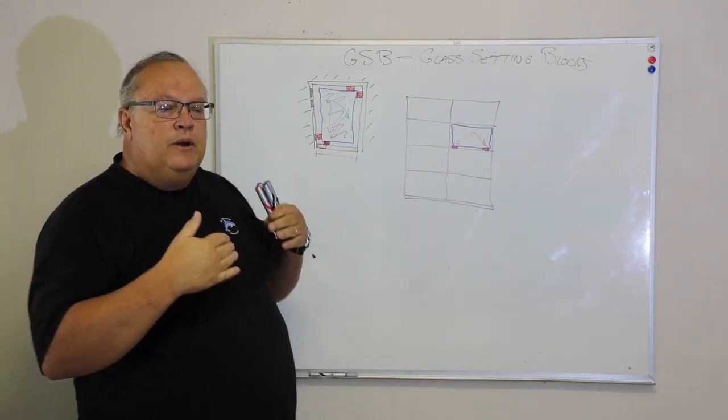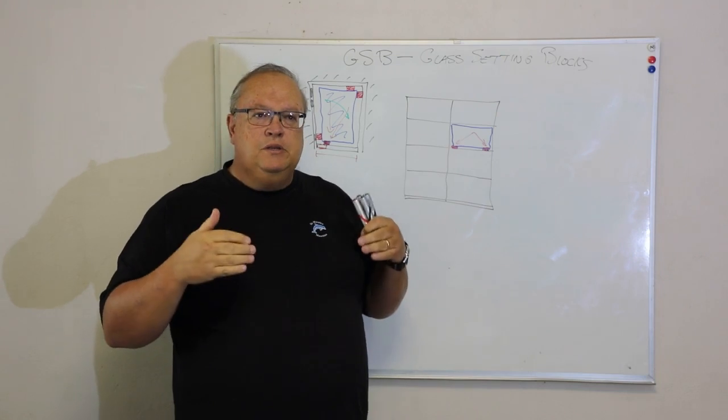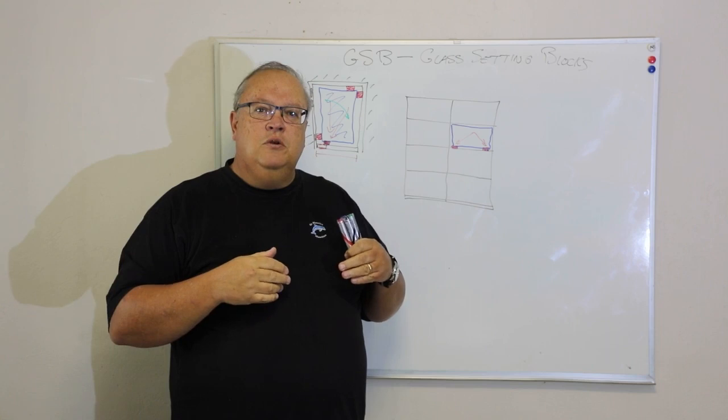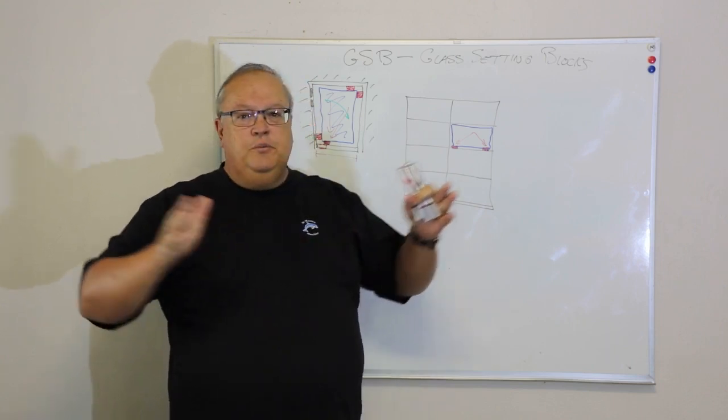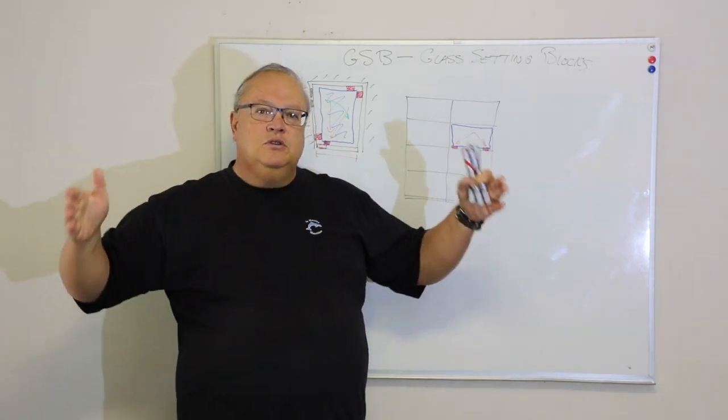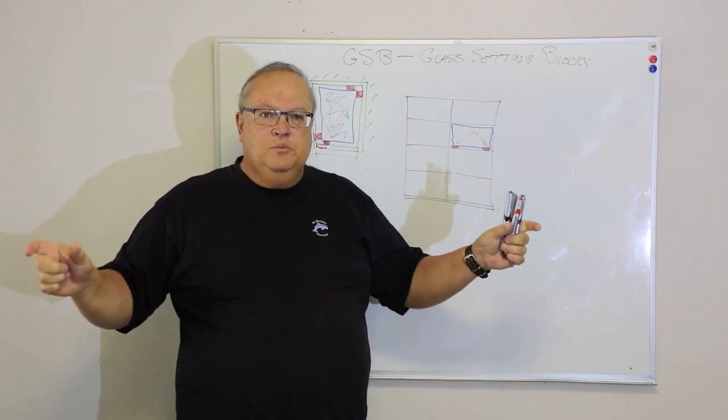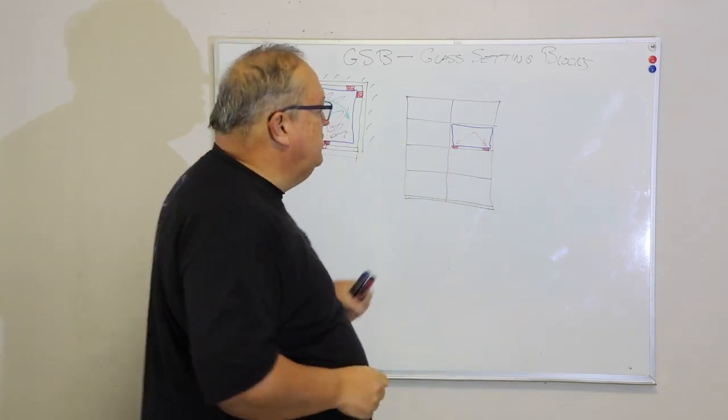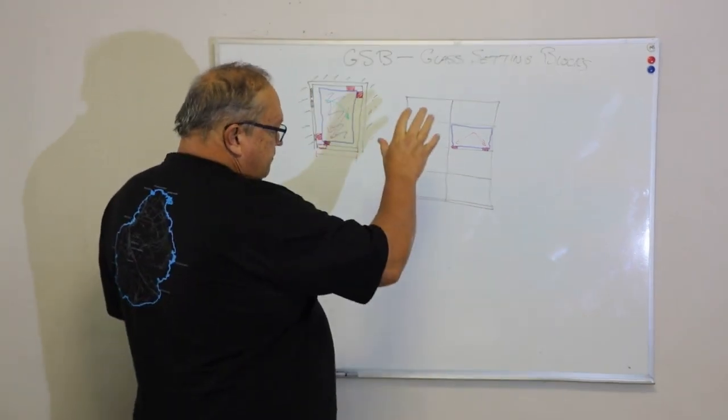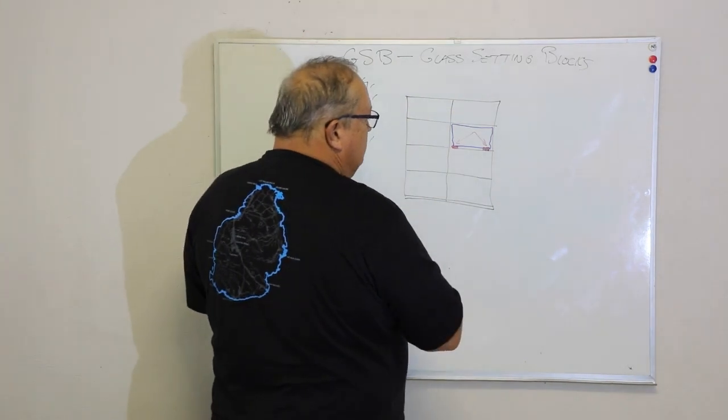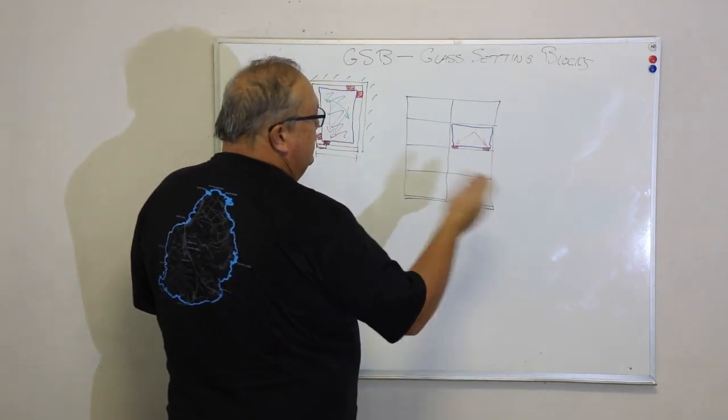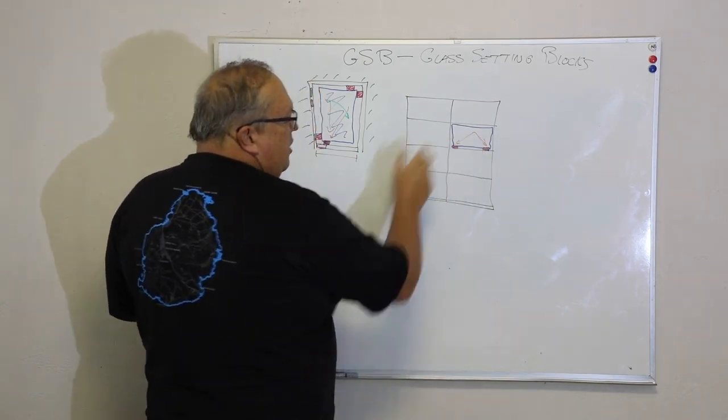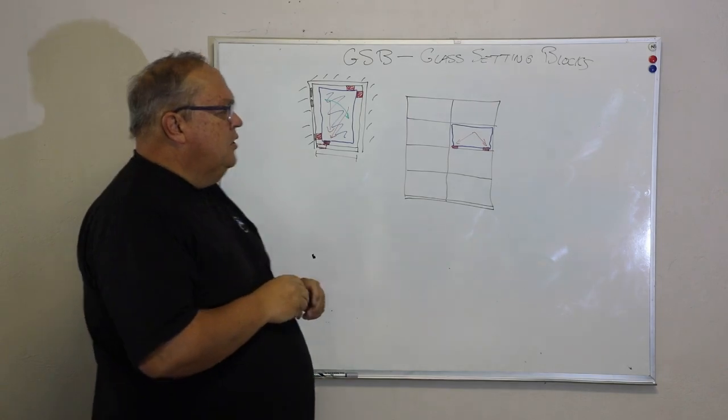So a lot of people worry about transom sagging, and they say well especially if you're putting a piece of double glaze in above it. That should never be a concern because as long as your glass sitting blocks are distributing the weight of that piece of glass to the outer edges, those are the strongest points of the transom, and the transom should not sag. So on a fixed pane of glass because we are not worried about this opening and closing and moving around, we don't need to do anything else. We can get away with just putting those two glass sitting blocks.